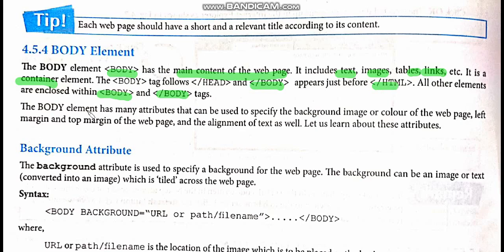The body element has many attributes that can be used to specify various properties. Attributes are used to describe a tag. The body element's attributes describe things like the background image or color of the web page, left margin, top margin of the web page, and alignment of the text written on the web page. These things are described by the attributes of the body tag.